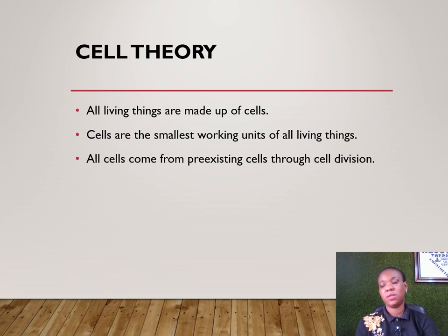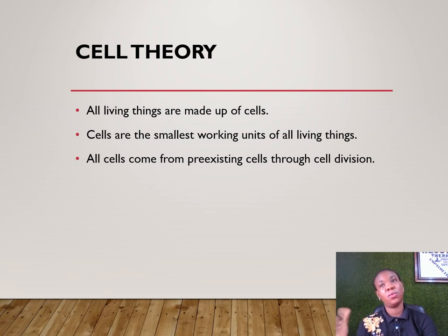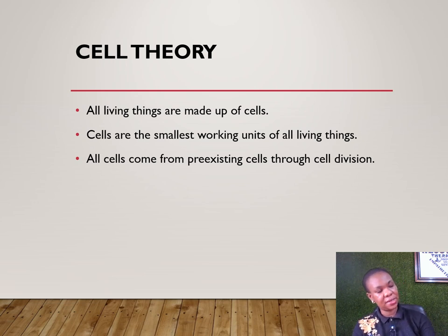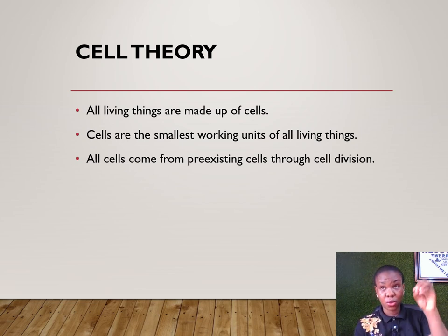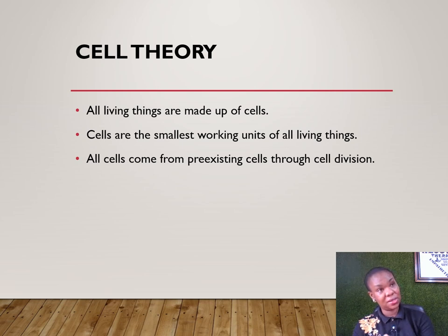The cell is also the smallest working unit of any living tissue, the same way the atom is the smallest unit of any inorganic matter. All cells come from pre-existing cells through cell division — there is no cell that comes out on its own. It is always from a pre-existing cell by the process of cell division.